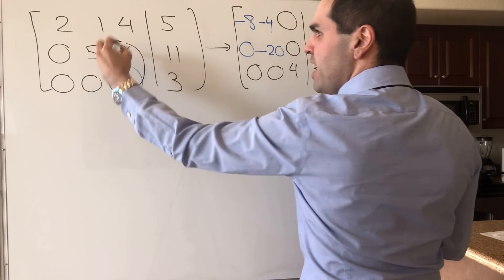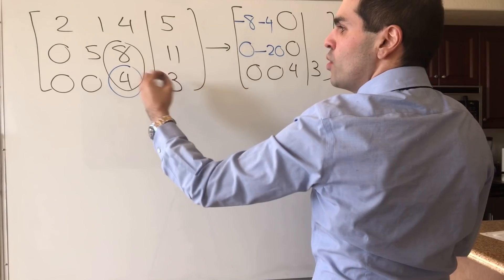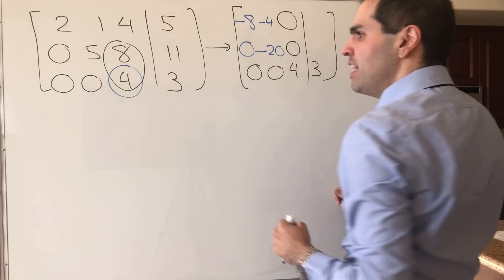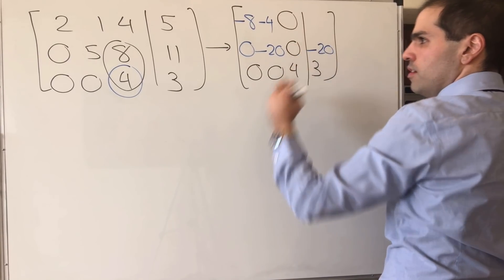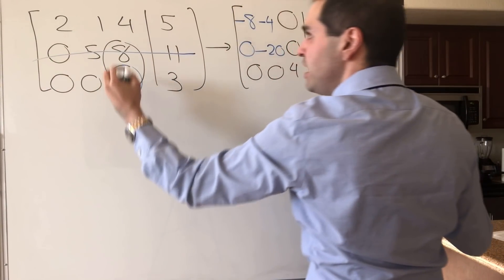And you take the determinant of the rest. So 8 times 3, that's 24 minus 44. And that becomes minus 20. And now, since you're done with the second row, you delete it.